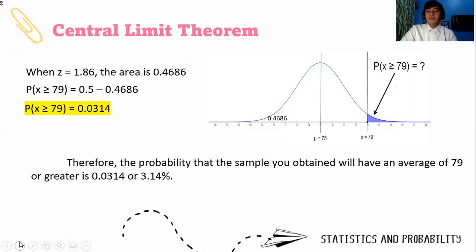Therefore, the probability that the sample you obtained will have an average of 79 or more is 3.14%. That's a very small probability that you will get 79 or more.